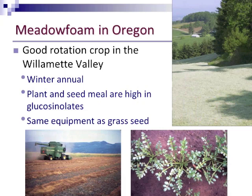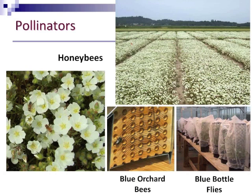You can see on the right there that the seeds are quite small. Metafoam is a very good rotation crop in the Willamette Valley of Oregon. It's a winter annual, so its production cycle fits in very well with the weather and rainfall patterns here. The plant and seed meal are high in glucosinolates — it's a member of the Brassicales — and the glucosinolates are thought to have some phytosanitary properties. It also fits very well into grass seed production systems, which are predominant here. You can see in the picture below the windrows being harvested of Metafoam using the same equipment you would use for grass seed production.